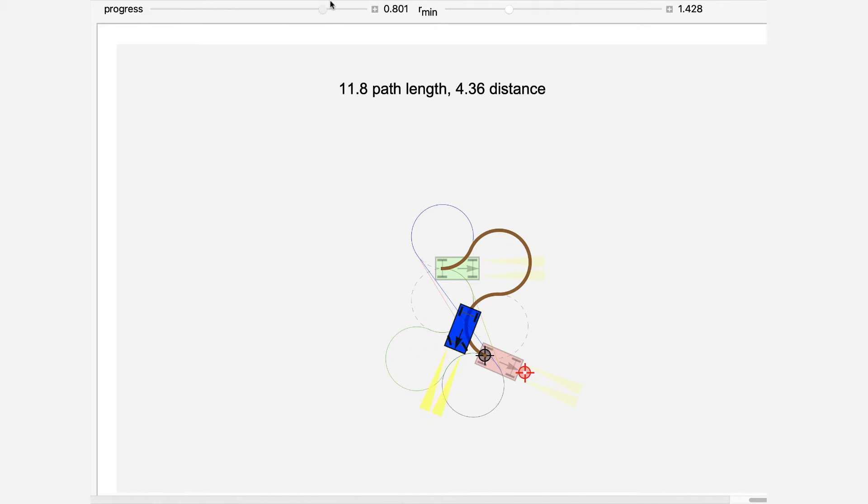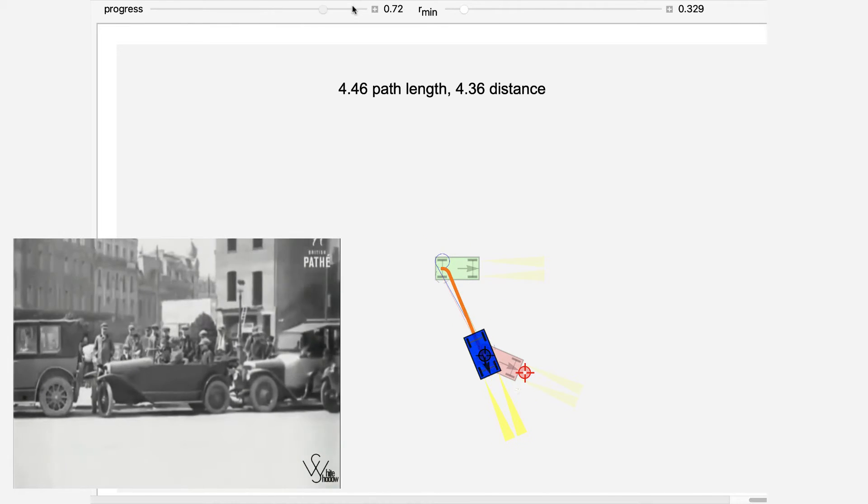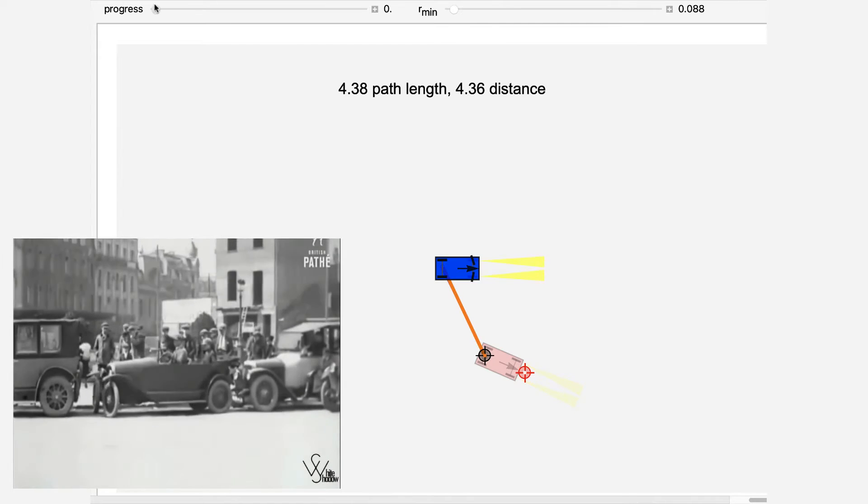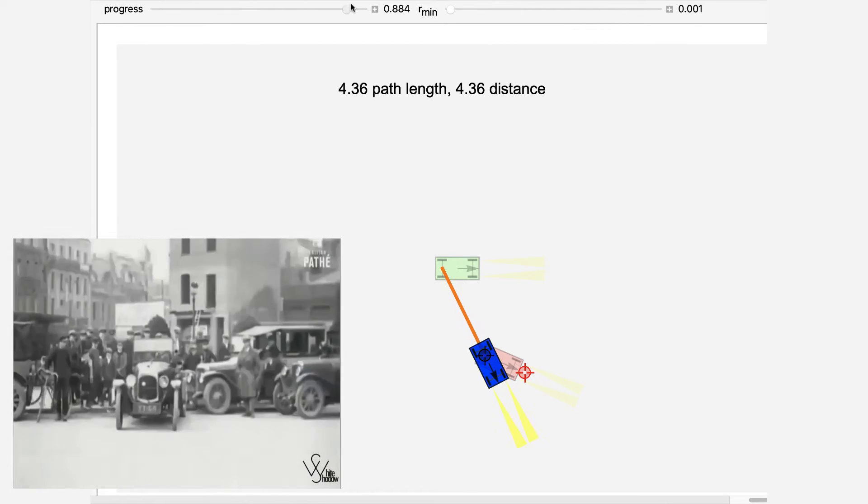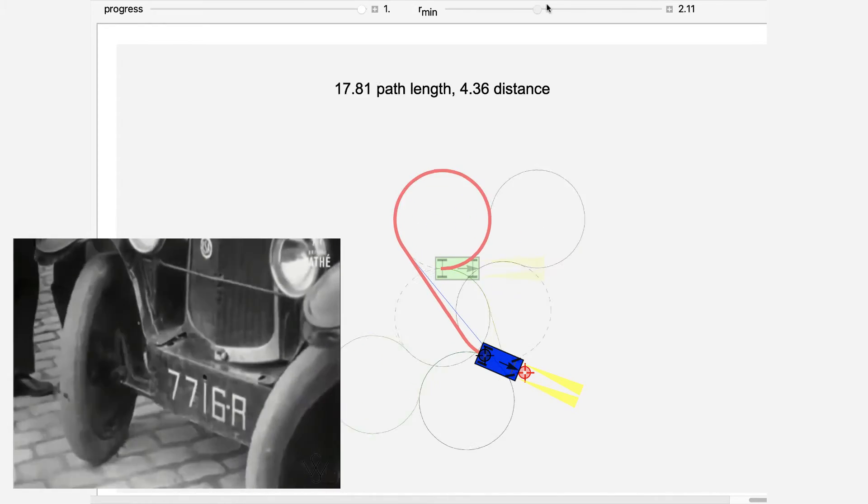We know that the shortest distance from one point to another is a straight line. Unfortunately, unless you drive a Batmobile, a car cannot pivot in place. Instead, the car has some minimum turning radius R-min. It cannot make a turn tighter than that.